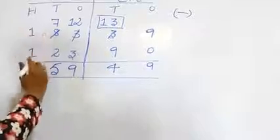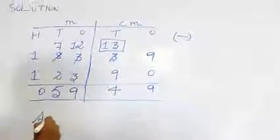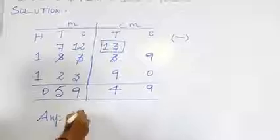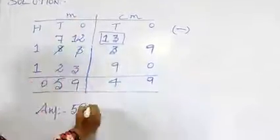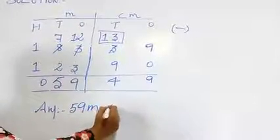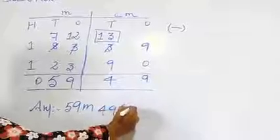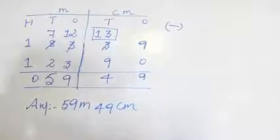1 minus 1 equals 0. So what's our answer now? 59 meter and 49 centimeter. This is our answer children.